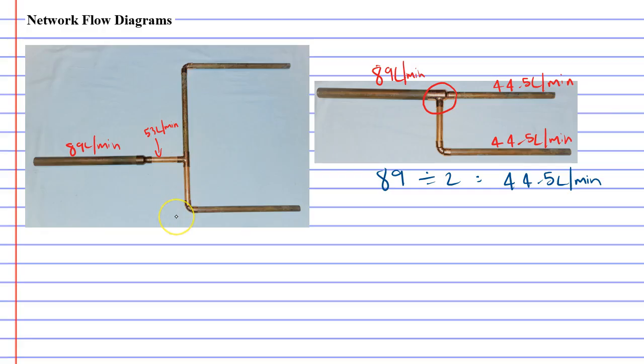And then we hit this T intersection which splits it in two, and because the flow rate has already decreased to 53 liters per minute, we have to divide that number by two. So 53 divided by two is 26.5 liters per minute. So each of these two paths only have a flow rate of 26.5 liters per minute, which is significantly lower than the flow rates on the diagram on the right.